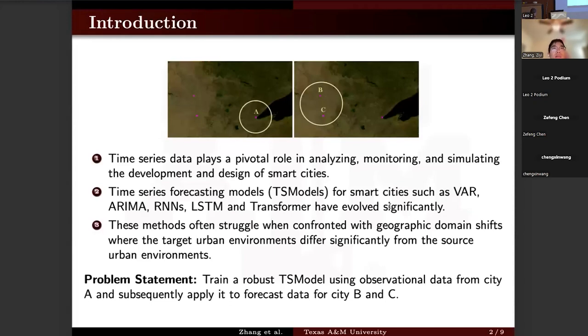Formally, the problem can be formulated as: how can we train a robust time series forecasting model using observational data from city A and then apply it to forecast the data for city B and C?